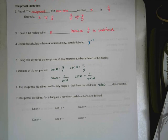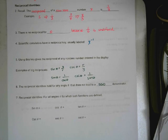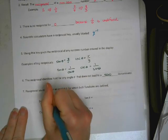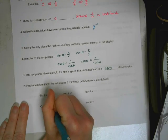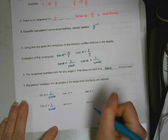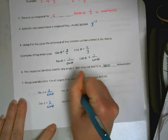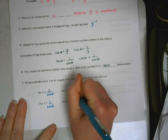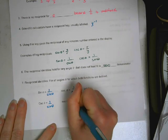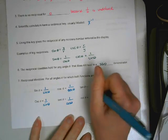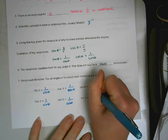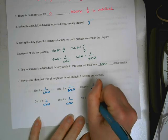These are all the reciprocal identities. You need to memorize them. Sine of theta is 1 over cosecant theta, and cosecant theta is 1 over sine theta. Cosine theta is 1 over secant theta, and secant theta is 1 over cosine theta. Tangent theta is 1 over cotangent theta, and cotangent is 1 over tangent.